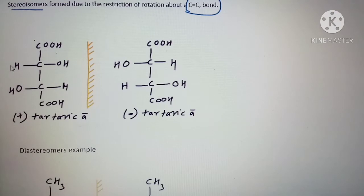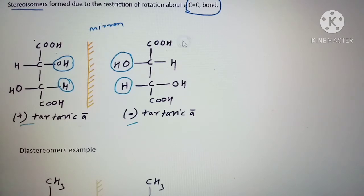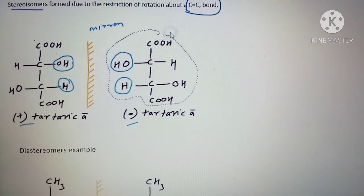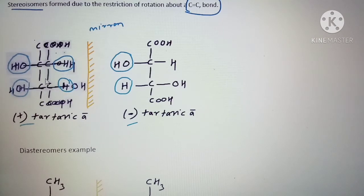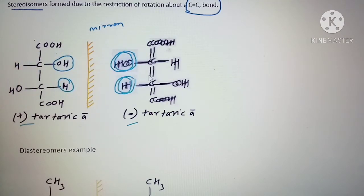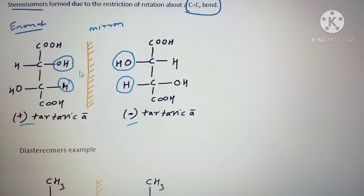An example for enantiomers is tartaric acid in its plus and minus forms. The OH groups are arranged as mirror images of each other. If you place one over the other, you can see that they are non-superimposable — the OH cannot be placed over the H — which means they are non-superimposable. This is what is known as enantiomers; they are exact mirror images of each other.